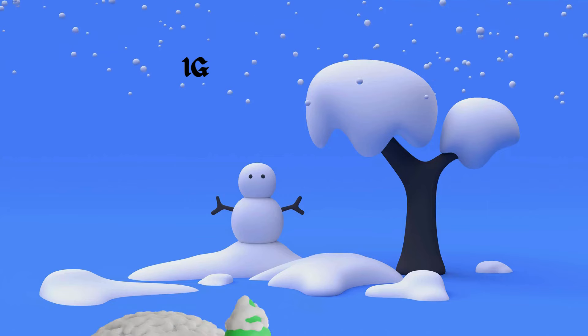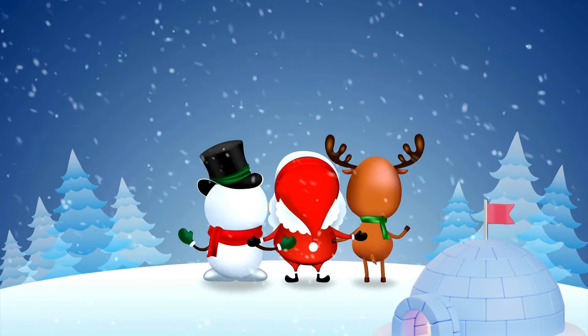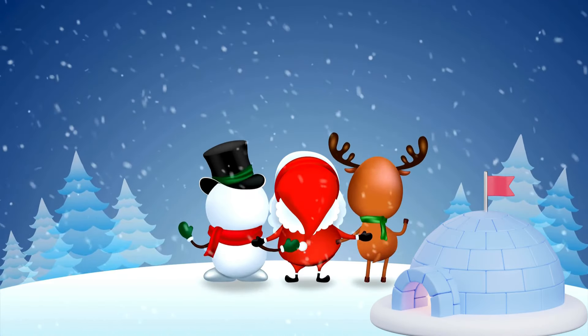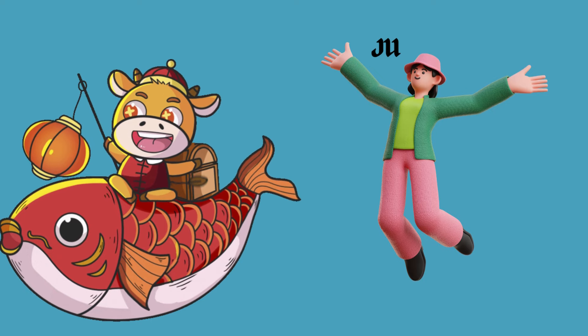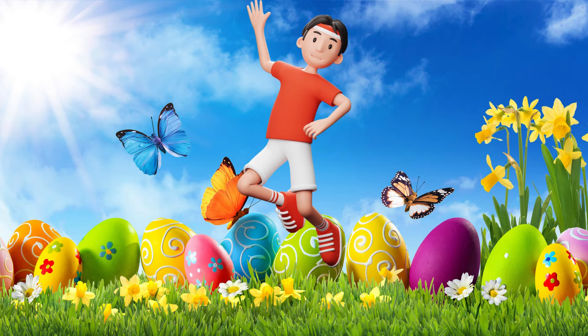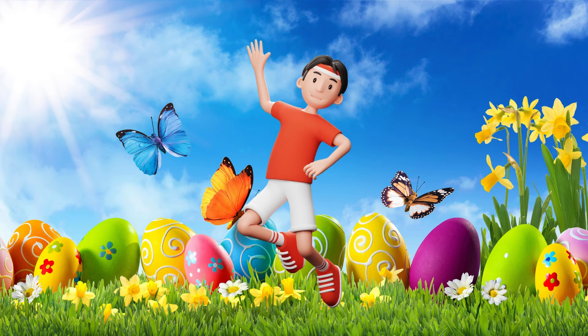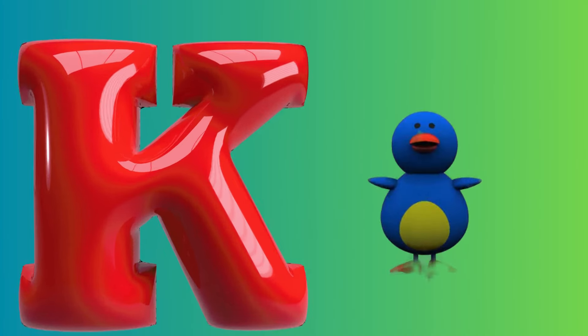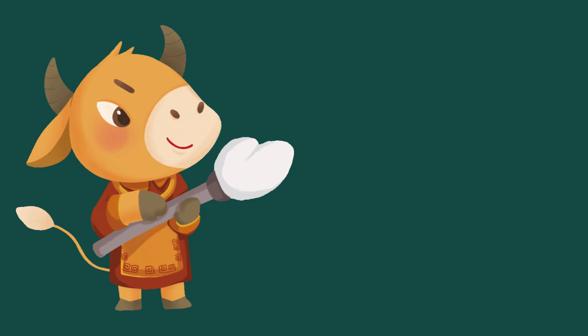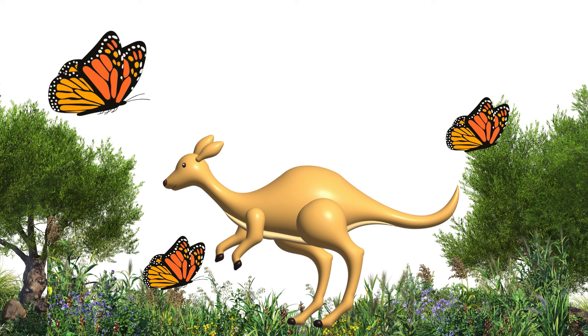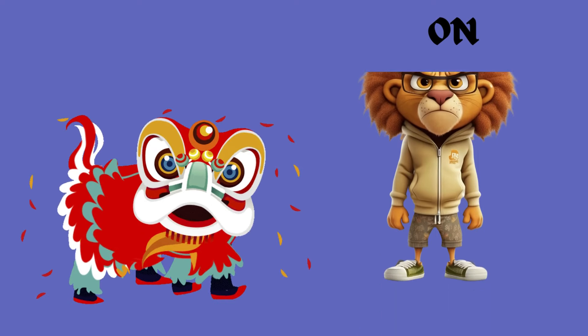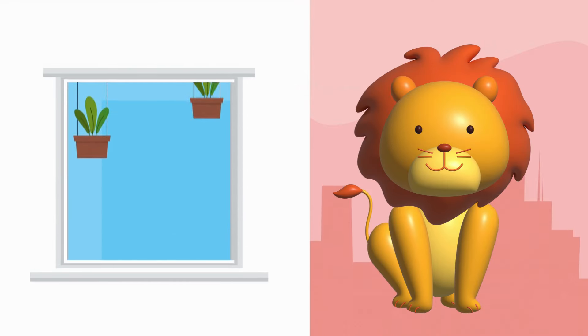I is for igloo, i-i-igloo. J is for jump, j-j-jump. K is for kangaroo, k-k-kangaroo. L is for lion, l-l-lion.